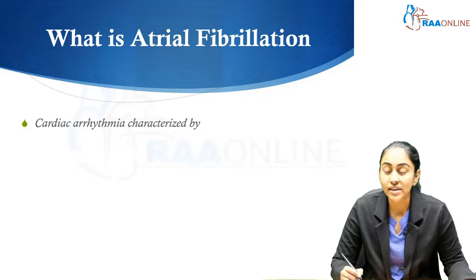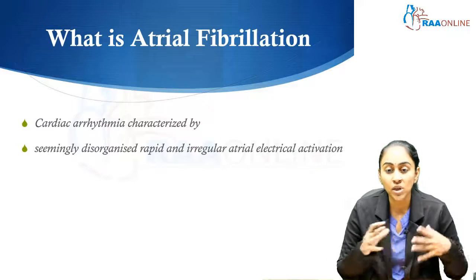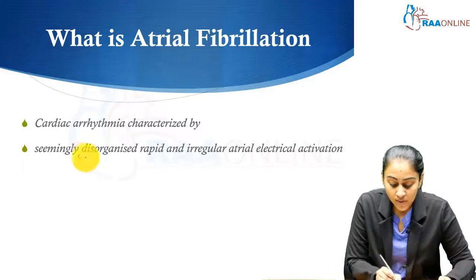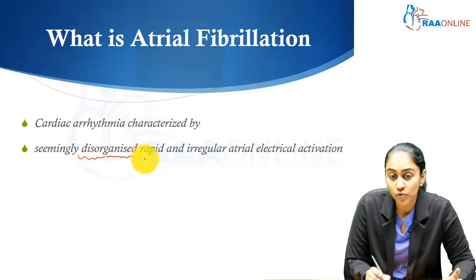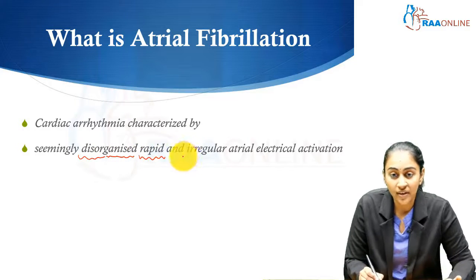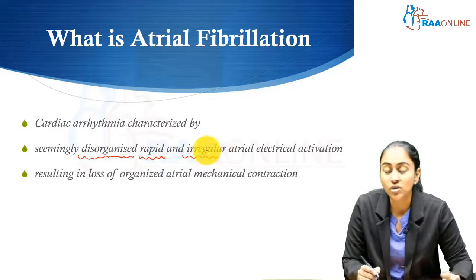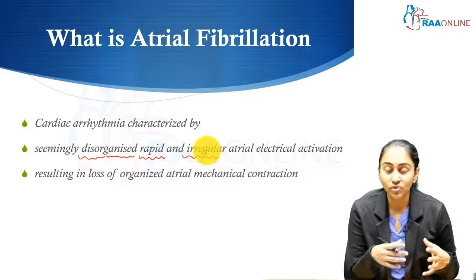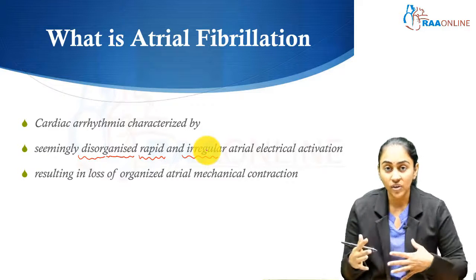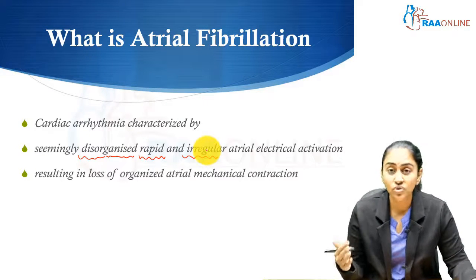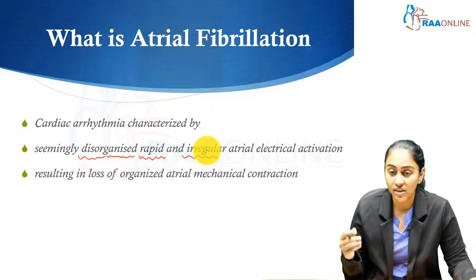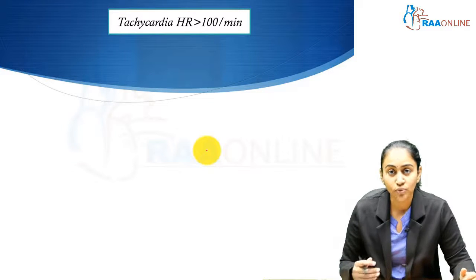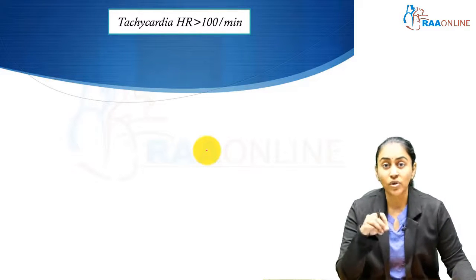Atrial fibrillation is a cardiac arrhythmia characterized by seemingly disorganized, rapid, and irregular atrial activation. Stress on three important words: disorganized, so chaotic; rapid; and irregular atrial activation. This results in loss of organized atrial mechanical contraction — there is a chaotic, rapid, and irregular activation of the atria resulting in loss of effective organized contraction.